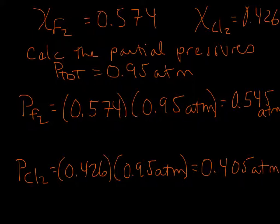Now we have the partial pressures of both gases in this mixture. To recap: we started with masses and percentages by mass, and most of what we did was convert the masses of gas to moles so we could get the mole fraction. Then the mole fraction of fluorine multiplied by the total pressure gives the partial pressure contributed by fluorine gas — 0.545 atmospheres. The same goes for chlorine gas, which contributes 0.405 atmospheres.